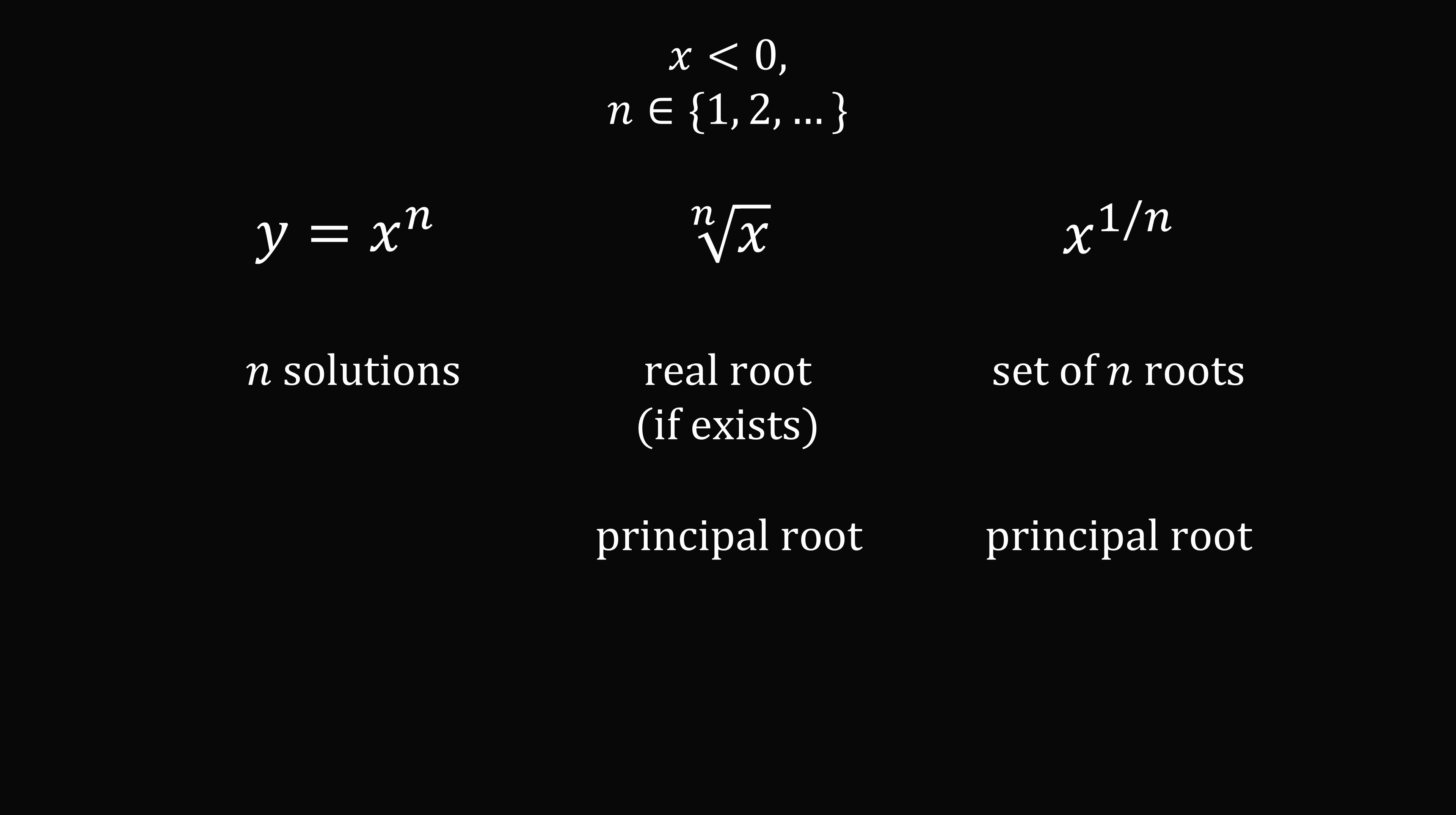Now x to the power of 1 over n can be used to denote the set of n roots, but it might also be used to denote the principal root. This will depend a little bit on context. But the general point is that the nth root of x and x to the power of 1 over n may not be the same thing in all contexts, and it's an important distinction to know.